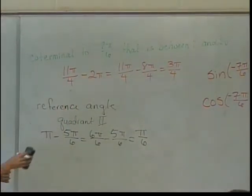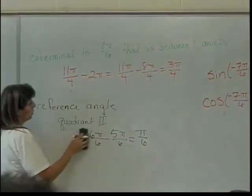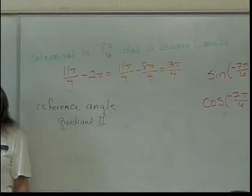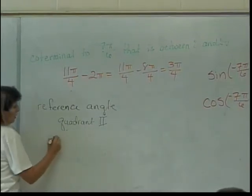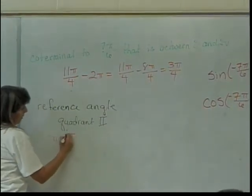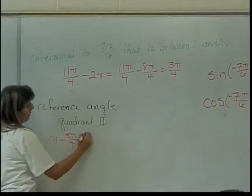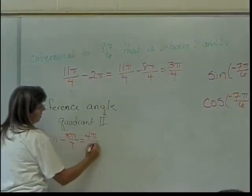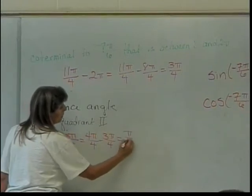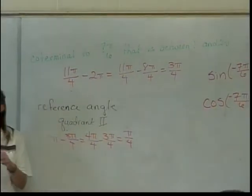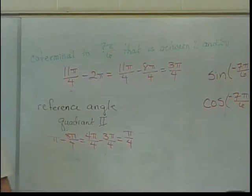Okay. So, then, I'm in quadrant 2 because we figured that out in the process. So, I find my reference angle by doing what? Pi minus 3 pi over 4, which will be 4 pi over 4 minus 3 pi over 4, which will give me just pi over 4. So, my reference angle is pi over 4. Everything is going to be related to pi over 4.